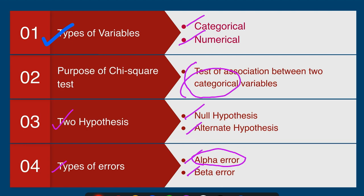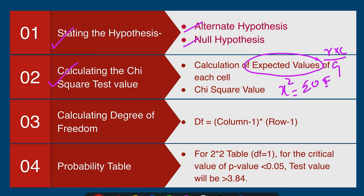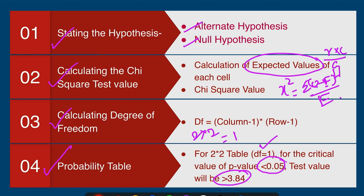The steps in calculating chi-square test are: first, state the hypothesis — alternate and null. Second, calculate the chi-square test value using expected values given by row total times column total divided by grand total, then sigma of observed minus expected squared divided by expected. Third, calculate the degree of freedom — for a 2x2 table it is 1. Fourth, look at the probability table: when chi-square value is more than 3.84, p-value is less than 0.05 for degree of freedom 1, and interpret whether the result is significant.